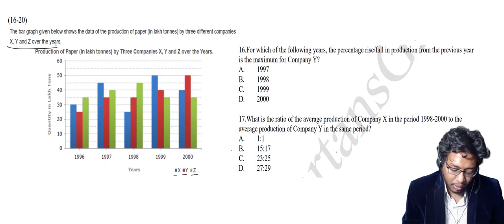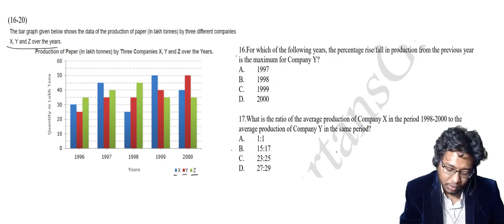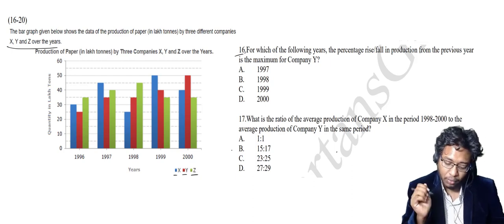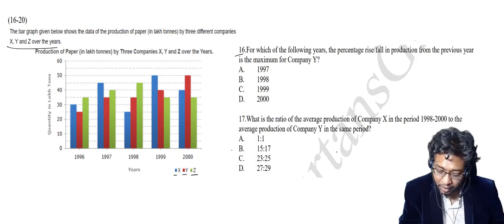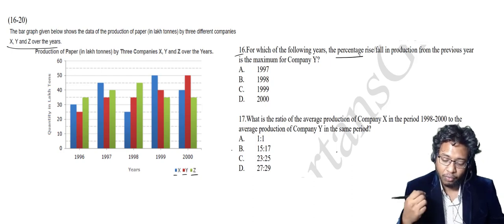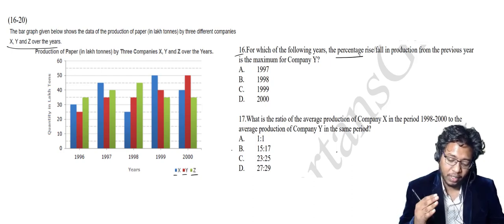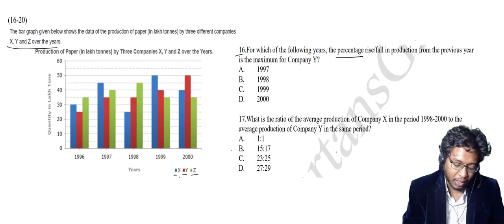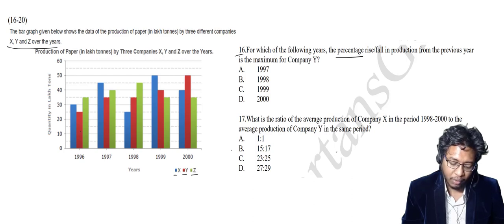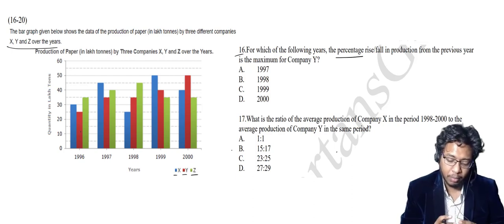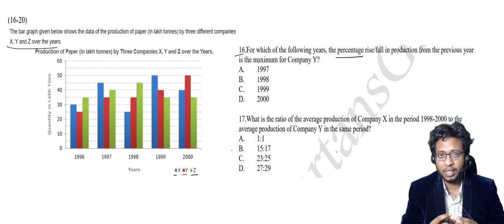The 16th question asks: for which of the following years is the percentage rise or fall in the production from the previous year maximum for company Y? Company Y means the red color bar — directly go to the red color bars. Whenever you are asked, there is a major difference between rise and fall and percentage rise and fall, so be careful with percentages.